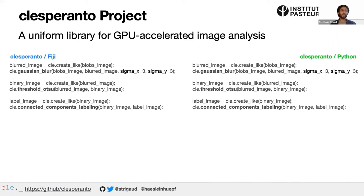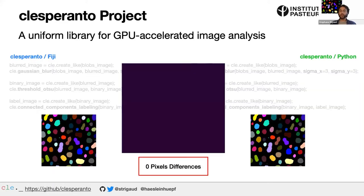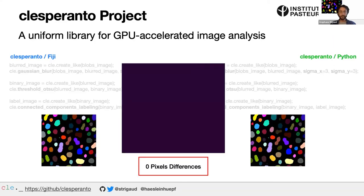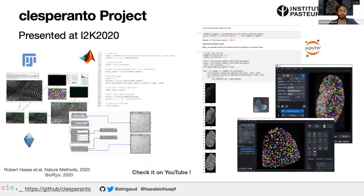The key part of Clasperanto is that it is a uniform library: no matter the framework or language you are using, we are trying to have the same naming, the same functions, and especially the same results. The code you can see here runs both on Python and on the Fiji macro side with CLIJ.